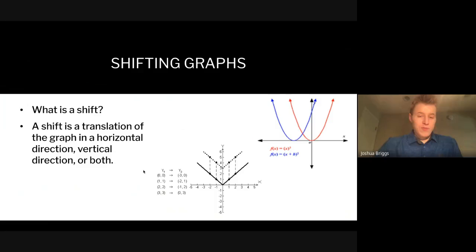First we must understand what shifting a graph means. A shift is when you take the same shape of the graph and move it — you don't change the shape, stretch it, or compress it. You can move it left, right, up, or down. That's called a shift — you're not altering the general structure, just moving it to a new location. This is also called a translation.